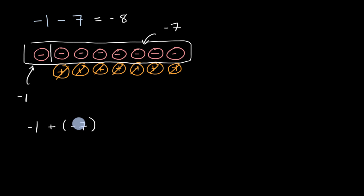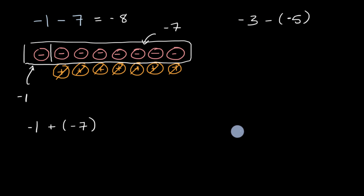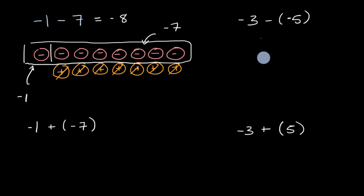Let's see if it actually works the other way around — what happens when we subtract a negative. So if we have negative three minus negative five, maybe this is the same thing as negative three plus the opposite of negative five, which would be positive five. Let's see if these two things actually amount to the same thing. So let's start with this first one. We're going to start with negative three, which gives us three negative integer chips: negative one, negative two, negative three.